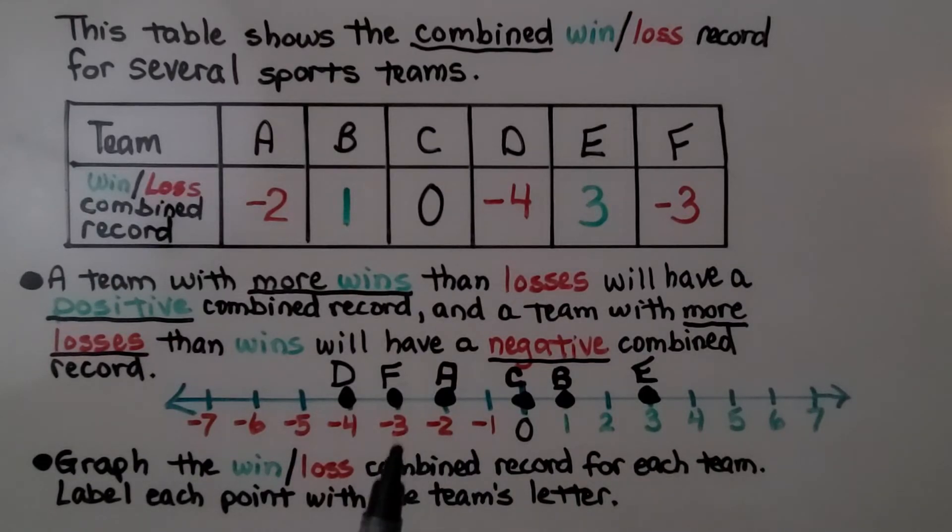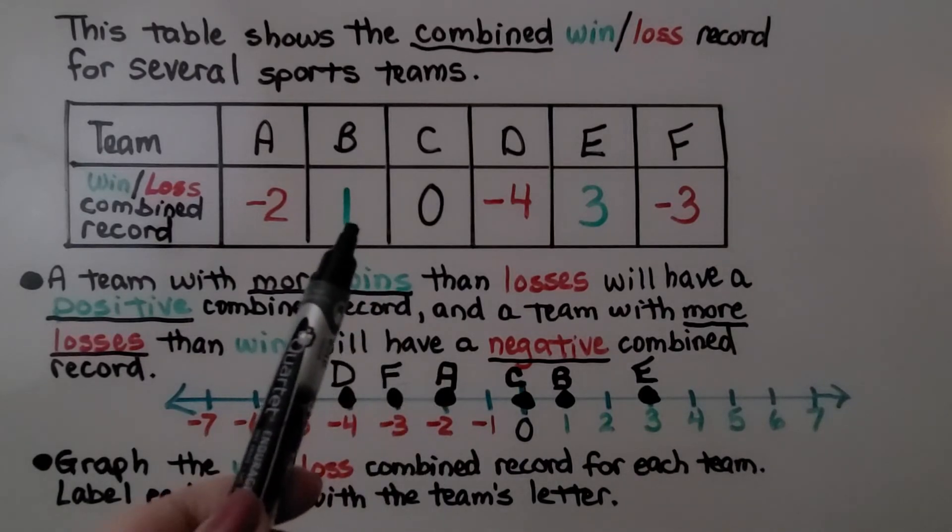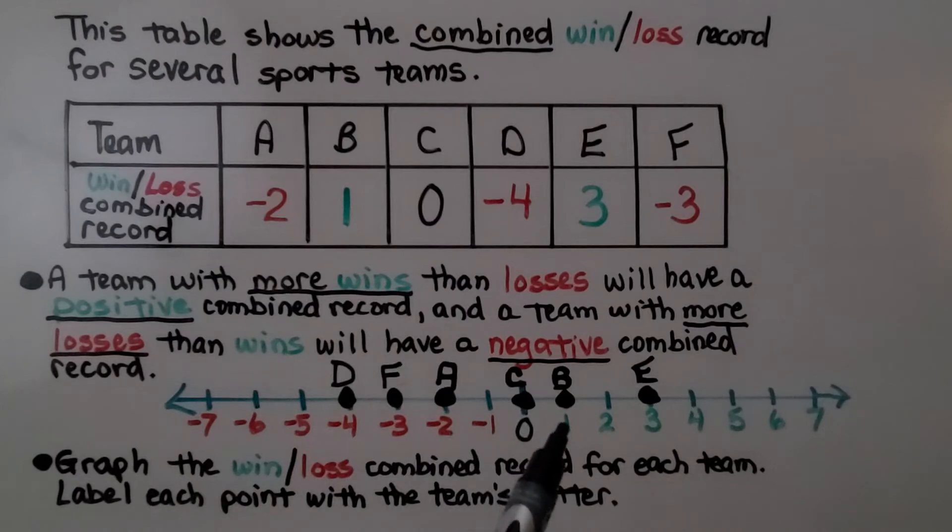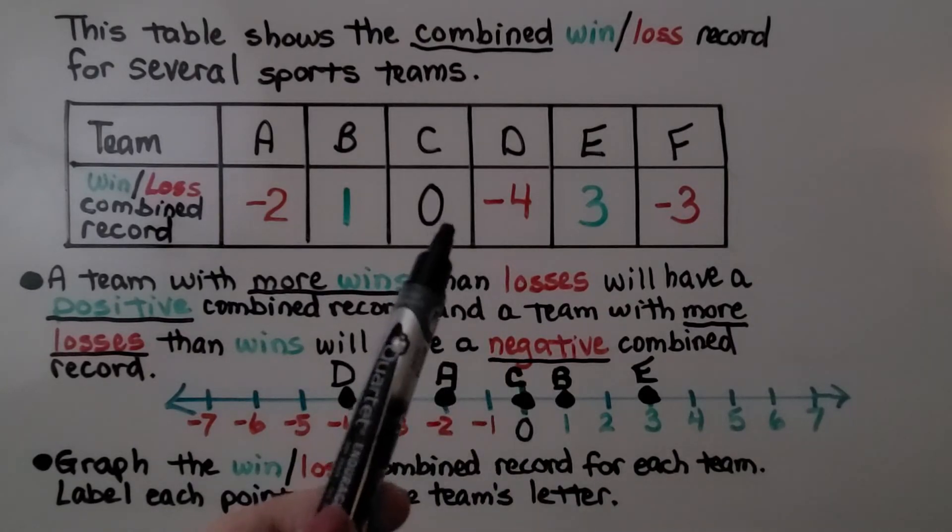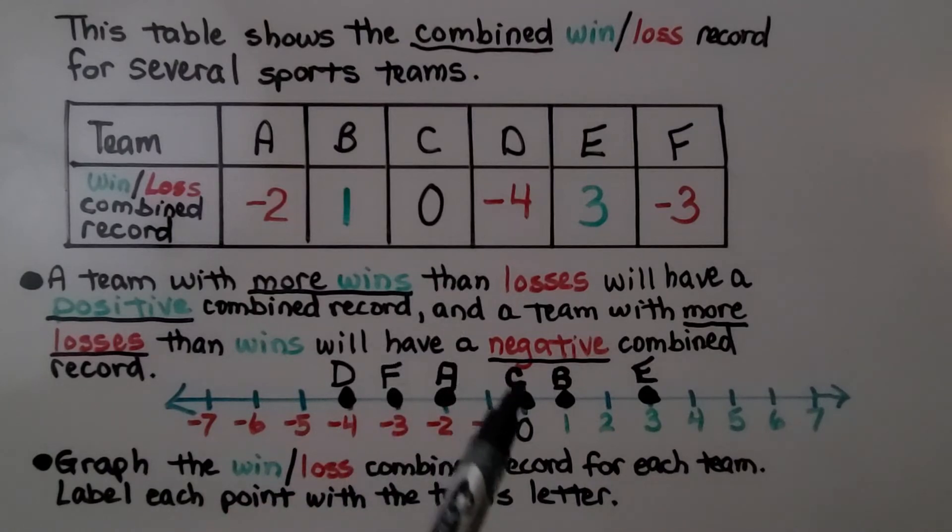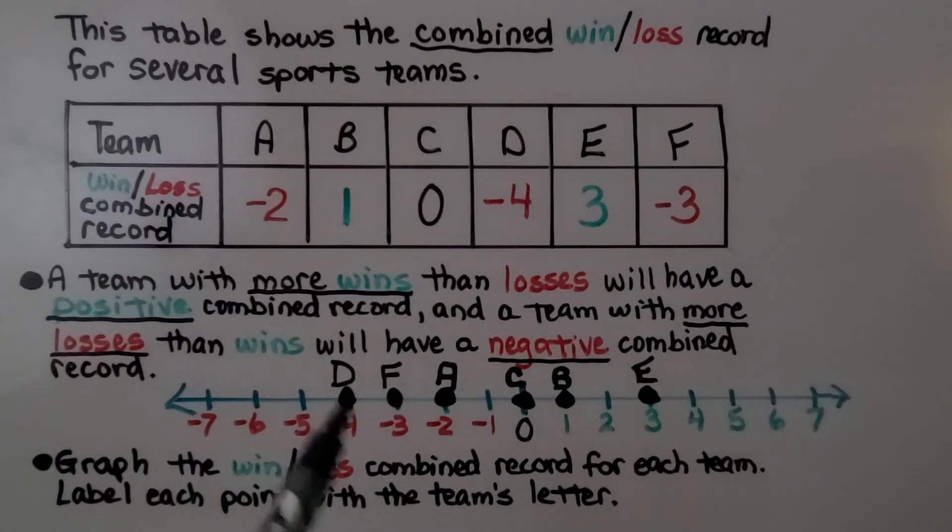We graph the win-loss combined record for each team and label each point with the team's letter. A is negative 2. We've graphed our point here and labeled it A. B is a positive 1. We've graphed the point and labeled that point B. C is 0. We've got our point with the C there. D is negative 4. We've got that labeled. E is a positive 3 and F is a negative 3.